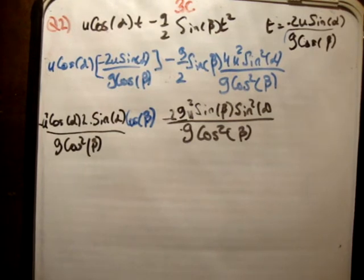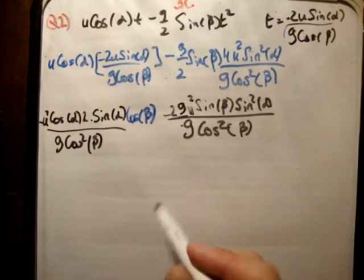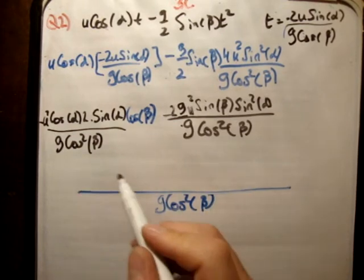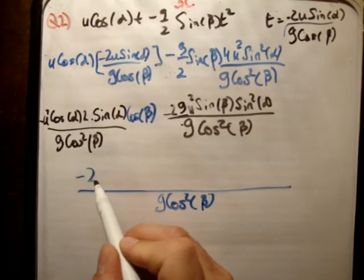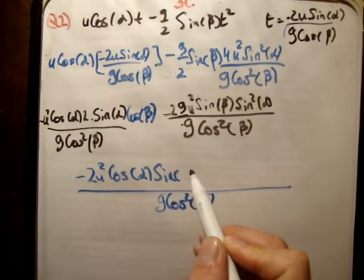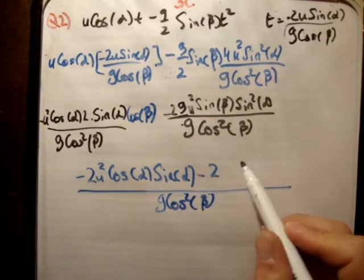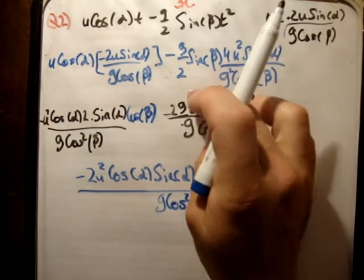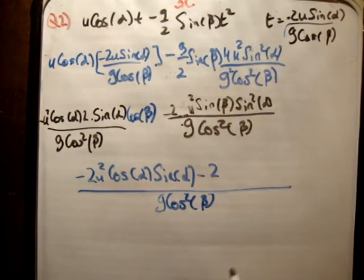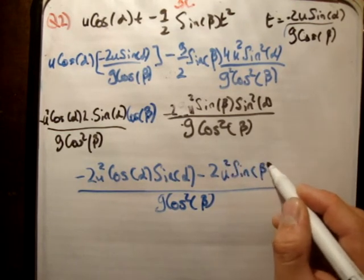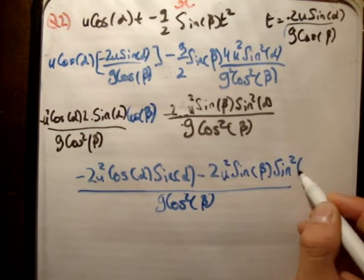Taking common denominator g cos² beta, we get minus 2u² cos alpha sin alpha minus 2u² sin beta sin² alpha, all over g cos² beta. Note that the g² in the second term: one g cancels with the g in front, leaving 2u² sin beta sin² alpha.